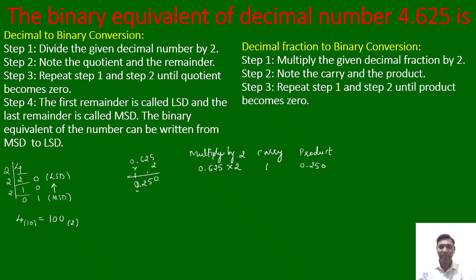Step 3 says repeat step 1 and step 2 until the product becomes 0. So we continue multiplying the product by 2. Now multiply 0.250 by 2. The result is 0.500. Here we have 0 in place of the whole number, so carry is 0 and the product is 0.500.